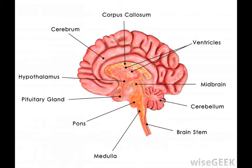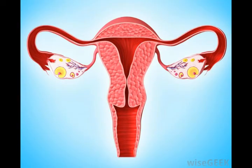Each monthly ovarian cycle starts when FSH is released by the pituitary gland, triggering the formation of an ovum, or egg, in one of the woman's ovaries. During ovum development, the egg follicle forms first. This follicle, which will eventually be the protective sac around the egg until it matures and is released into the fallopian tubes for ovulation, is what secretes the female hormone estrogen.